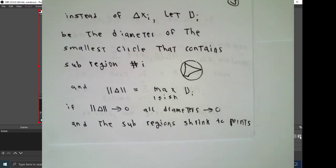We'll want all of these sub-regions to shrink down to points. So if you want to be technical about it, let capital D_i be the diameter of the smallest circle that contains chunk number i, and for the norm of the partition, instead of the biggest delta x, we'll have the biggest diameter. If this number, norm of partition, tends to zero, then all the diameters tend to zero. All sub-regions shrink down to points, then.